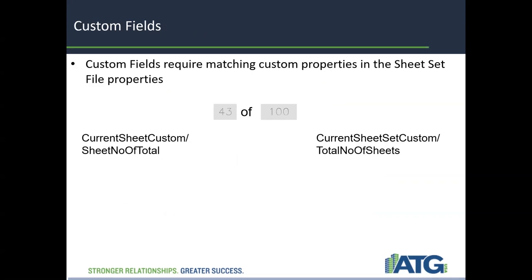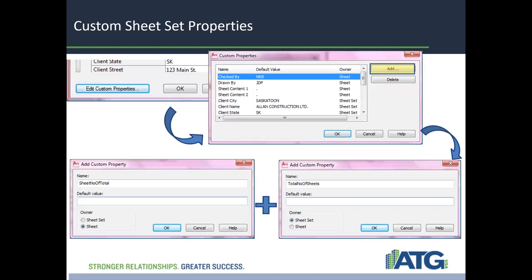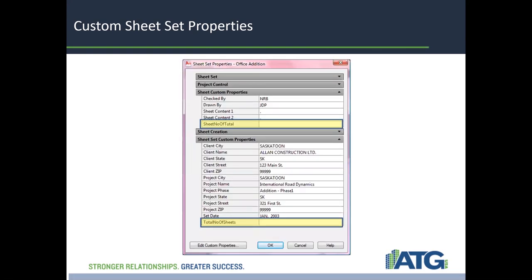You can create custom fields that require matching custom properties in the sheet set file properties. You have the current sheet custom, current sheet sheet number of total, and the current sheet set custom total number of sheets. In your custom sheet set properties you can add different custom properties and custom attributes. This is your custom sheet set property dialog box, where you can add your client city, client name, and who the project is being run by.